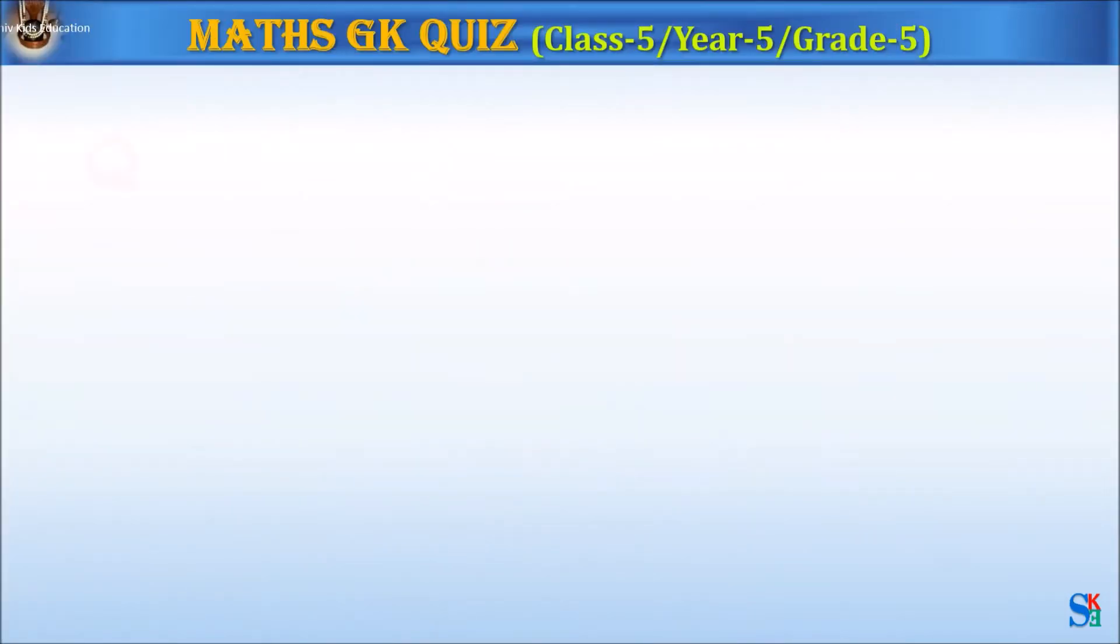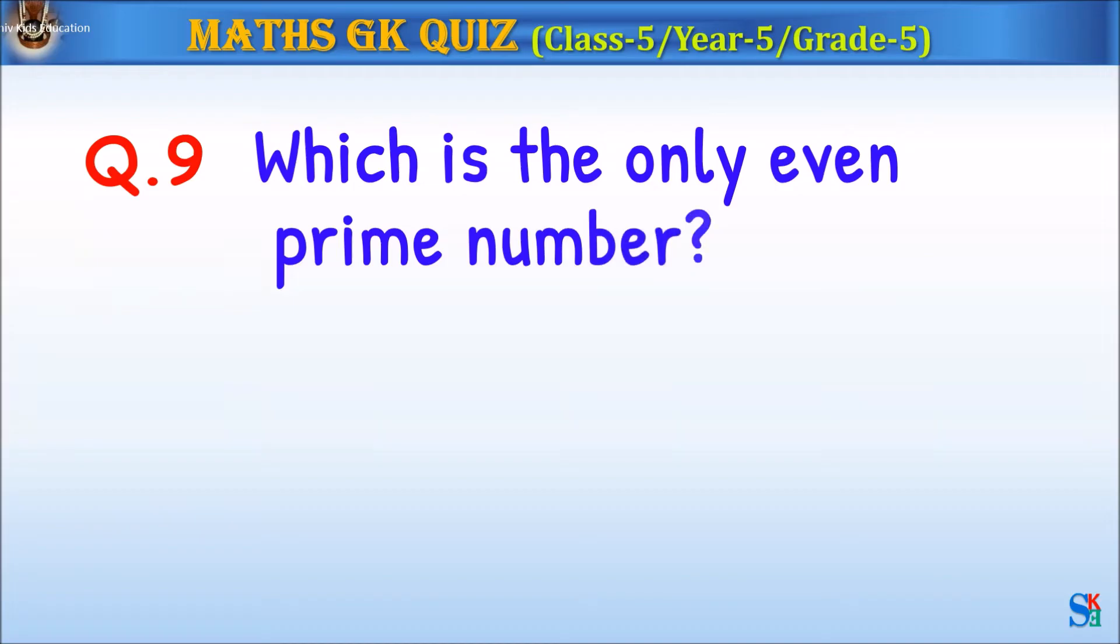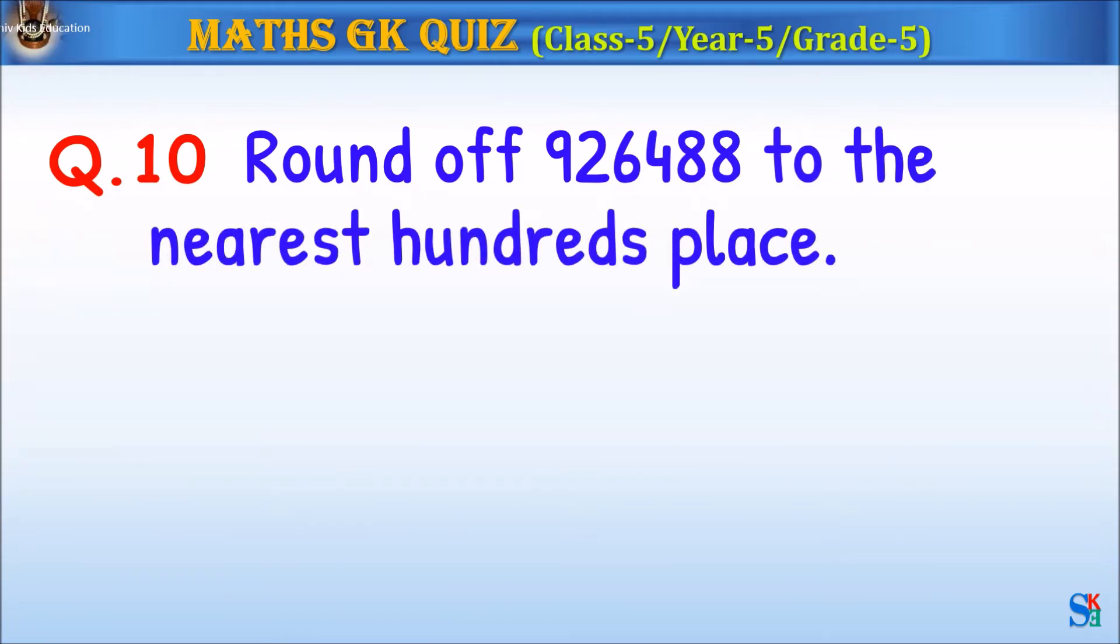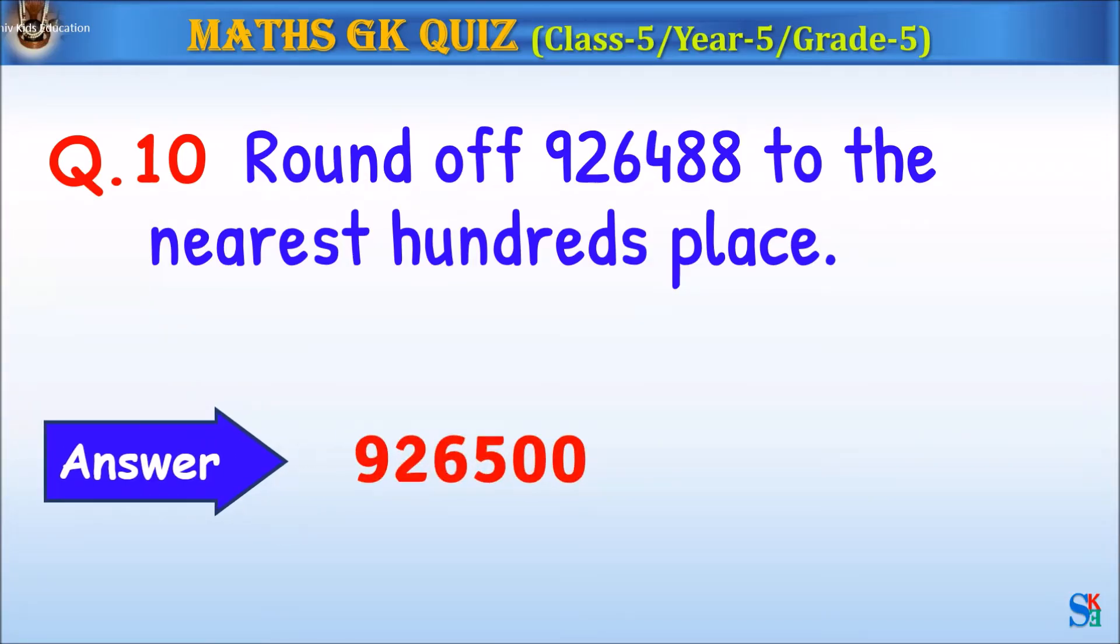Question 9: Which is the only even prime number? The answer is 2. Question 10: Round off 926,488 to the nearest hundredths place. The answer is 926,500.